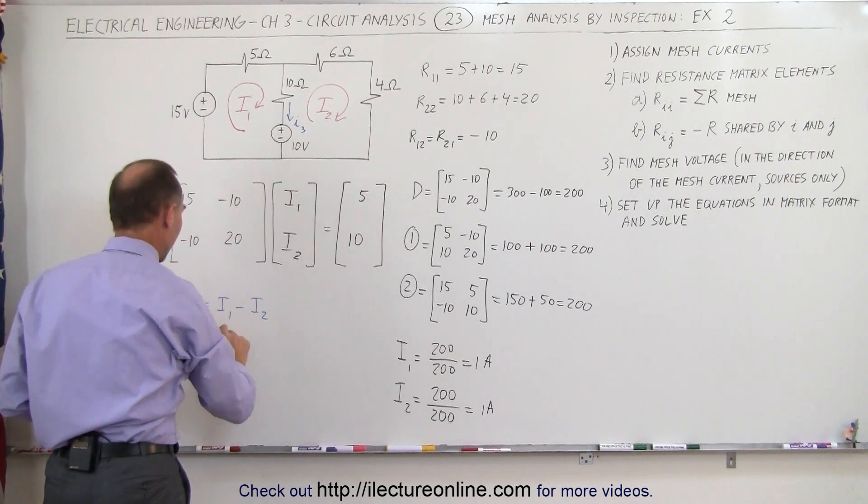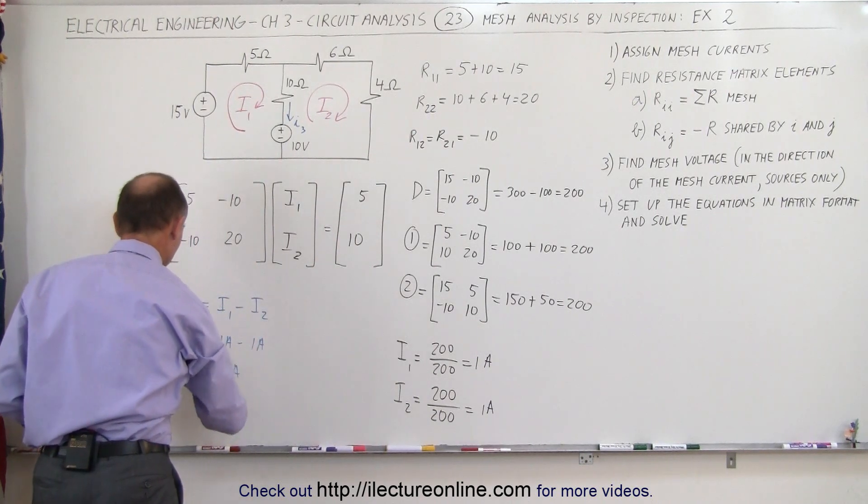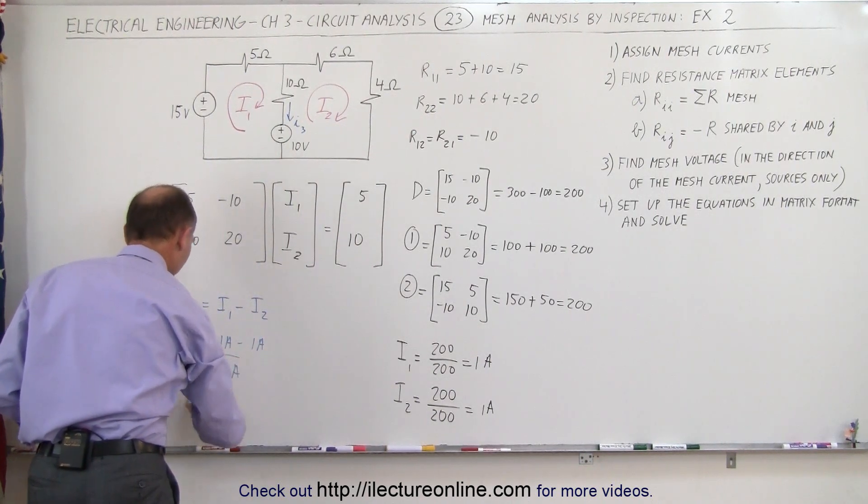This is equal to 1 amp for I1, minus 1 amp for I2, which is equal to 0 amps, which means that in the middle branch, there's absolutely no current.